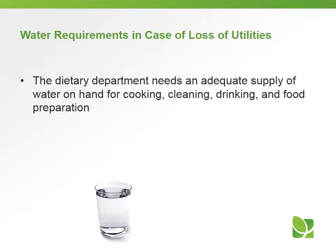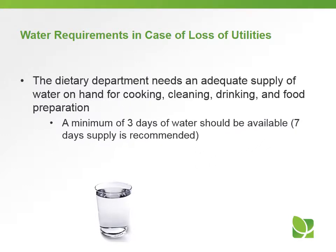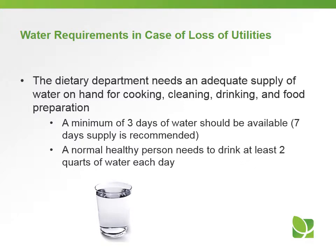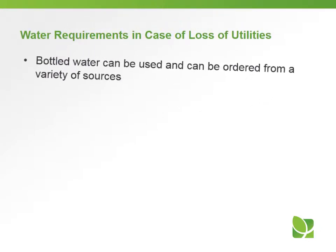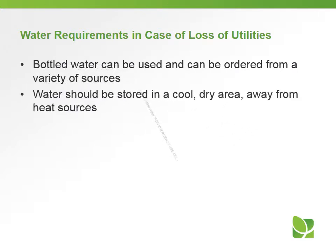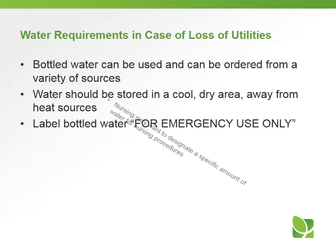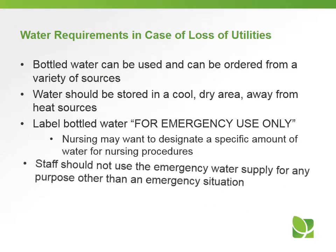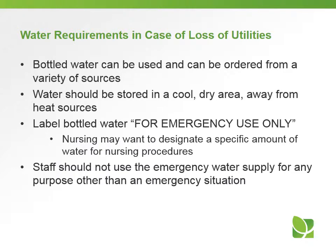Let's talk about water requirements in case of loss of utilities. The dietary department needs to maintain an adequate supply of water for cooking, cleaning, drinking, and food preparation. You need to have a minimum of 3 days of water available at all times, and 7 days is recommended. A normal healthy person needs to drink at least 2 quarts of water each day. Bottled water can be used and ordered from a variety of sources. Store water in a cool, dry area away from heat sources, and label it for emergency use only. Nursing may want to have their own water supply for nursing procedures, but staff should not use the emergency water supply for any reason other than an emergency.